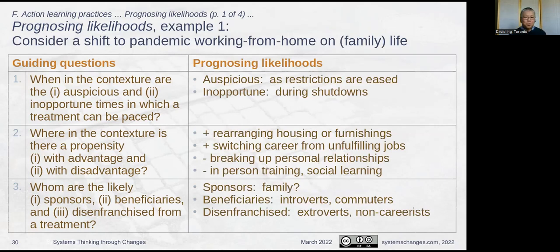Working from home: when is an auspicious time to make changes? You can't really do anything under full shutdown — that's inopportune. The auspicious time is when restrictions are eased. You might rearrange your housing or furniture; a lot of people are doing home renovations during the pandemic. A lot of people are switching careers from unfulfilling jobs. Who are the likely sponsors? If you're going to make a change in your working-from-home status within the family, hopefully you have support. Who benefits from working at home? Introverts and people who had long commutes — they like working from home. The people who are disenfranchised: those who want to go back to the office, the extroverts, the people who are non-caregivers — those would actually prefer not to work from home.